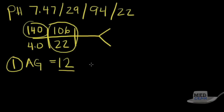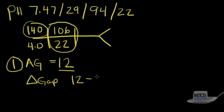The delta gap — the next thing we calculate — is simply the anion gap minus 12. We always take 12 away from the anion gap. Our delta gap is 0, meaning there is no anion gap metabolic acidosis occurring. That's very important.